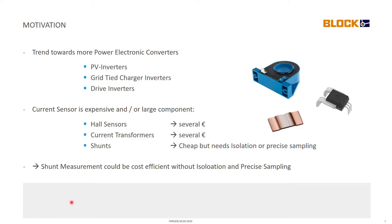And in all those inverters the current sensor is a quite expensive and or large component. So when we look into different options, we have Hall sensors or current transformers which both cost several euros a piece. And then we have shunts which are cheap themselves but then they need some isolation or precise sampling which then again makes them a little bit more expensive.